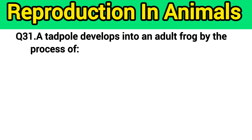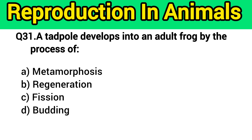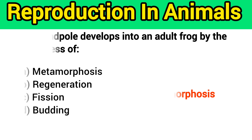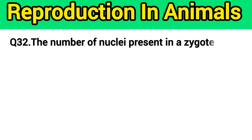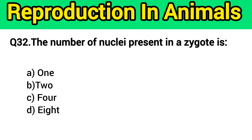Question number 31: A tadpole develops into an adult frog by the process of? The right answer is option A — metamorphosis. Question number 32: The number of nuclei present in the zygote is?